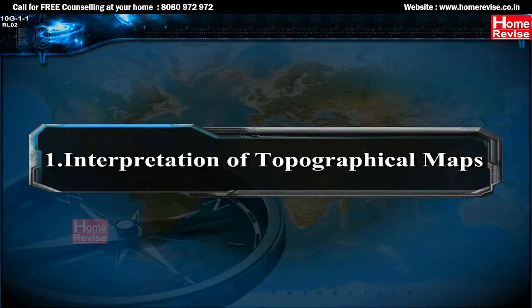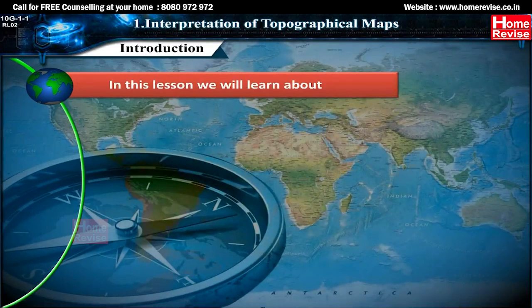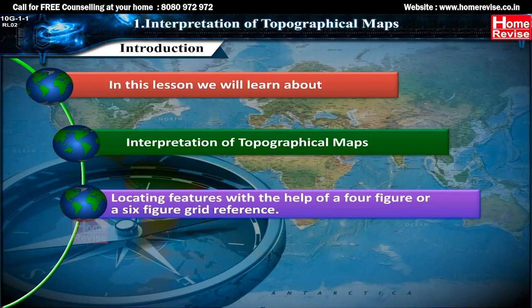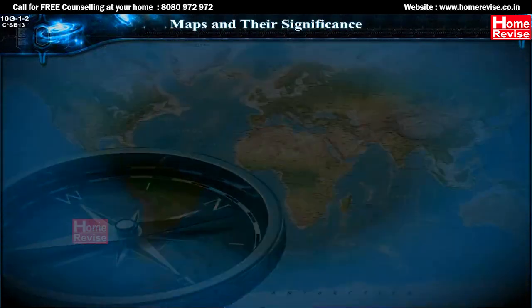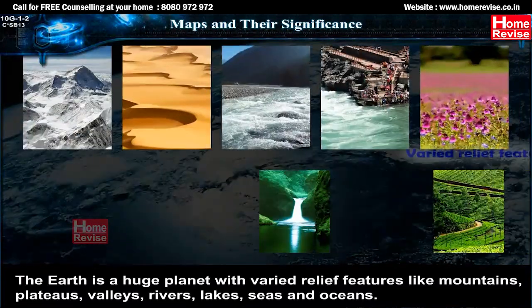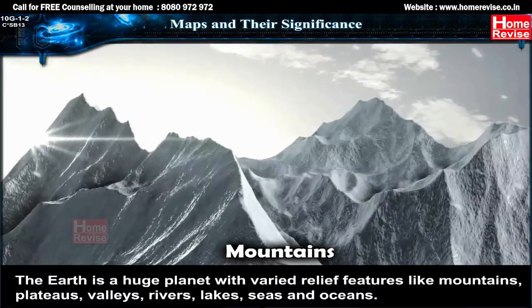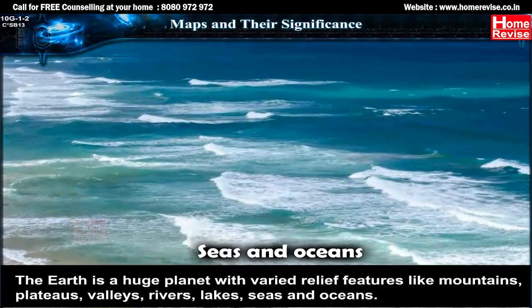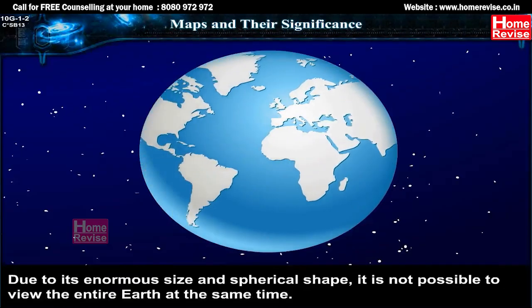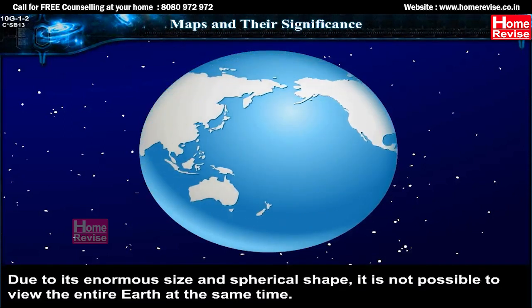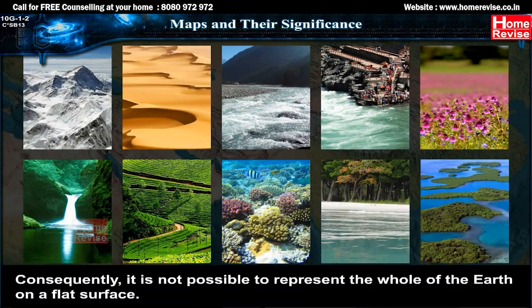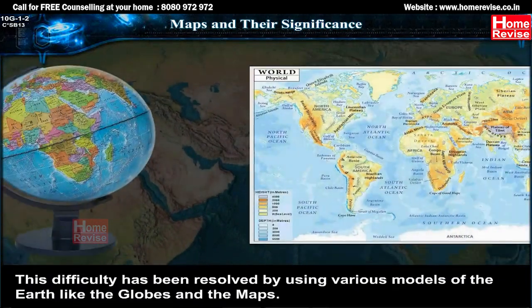Chapter one: Interpretation of Topographical Maps. In this lesson we will learn about interpretation of topographical maps, locating features with the help of a four-figure or a six-figure grid reference, maps and their significance. The earth is a huge planet with varied relief features like mountains, plateaus, valleys, rivers, lakes, seas and oceans. Due to its enormous size and spherical shape, it is not possible to view the entire earth at the same time, and consequently it is not possible to represent the whole earth on a flat surface.